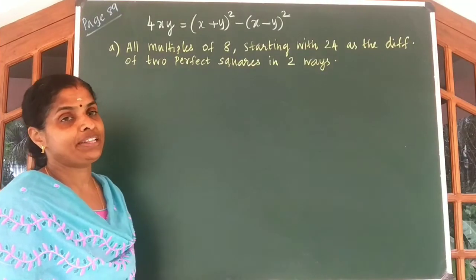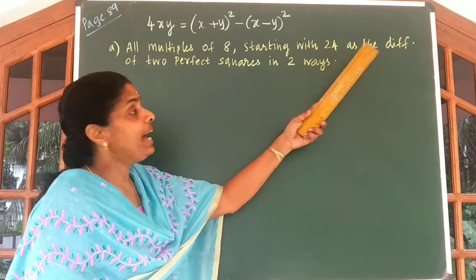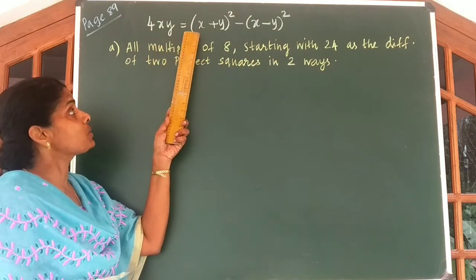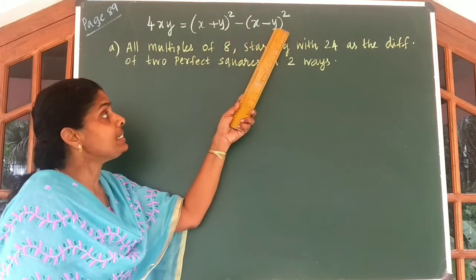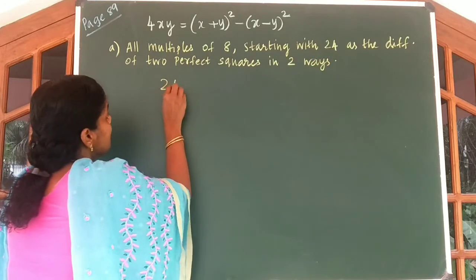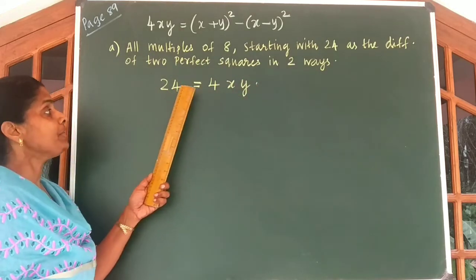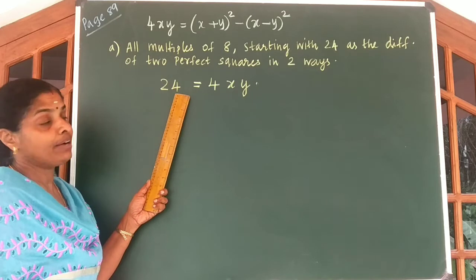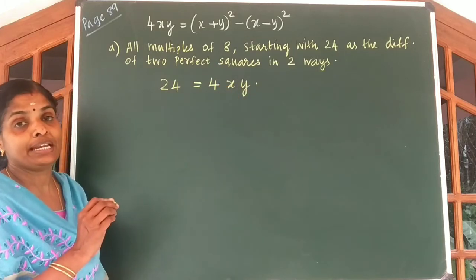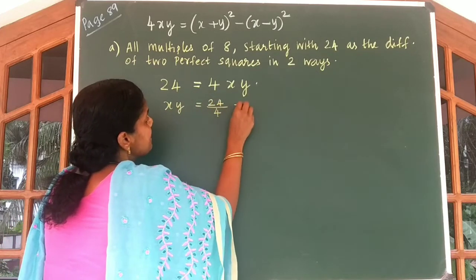Let us write the answer for the first sub question. We are going to write all multiples of 8 starting with 24 as the difference of two perfect squares in two ways. Using our idea, 4xy is equal to x plus y whole square minus x minus y whole square. Consider the number 24. We can write 24 is equal to 4xy. From this, xy is equal to 24 by 4, which is equal to 6.